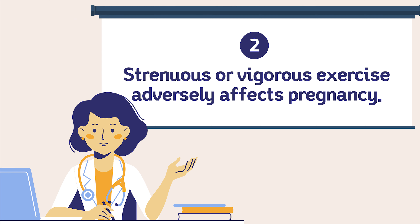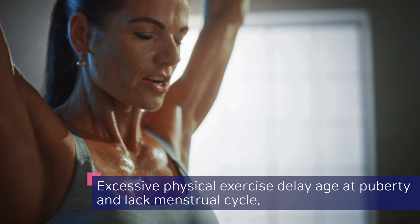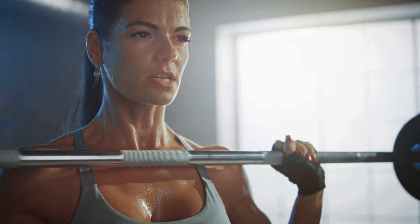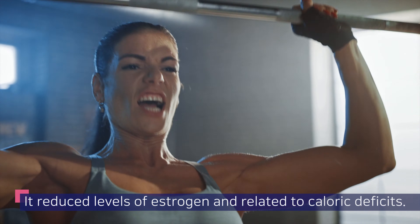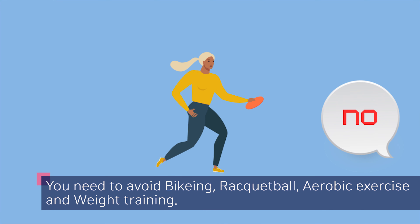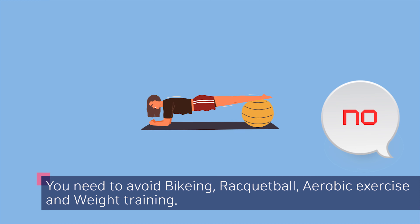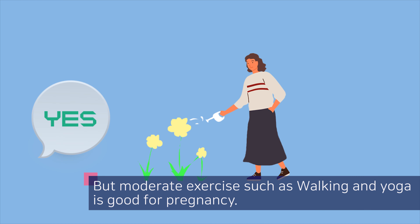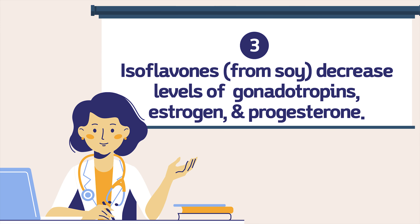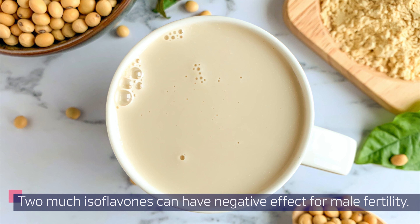Two: strenuous or vigorous exercise has adverse effects for pregnancy. Excessive physical exercise delays the age at puberty and disrupts the menstrual cycle. It reduces levels of estrogen and is related to caloric deficits. You need to avoid biking, racquetball, aerobic exercise, and weight training, but moderate exercise such as walking and yoga is good for pregnancy.